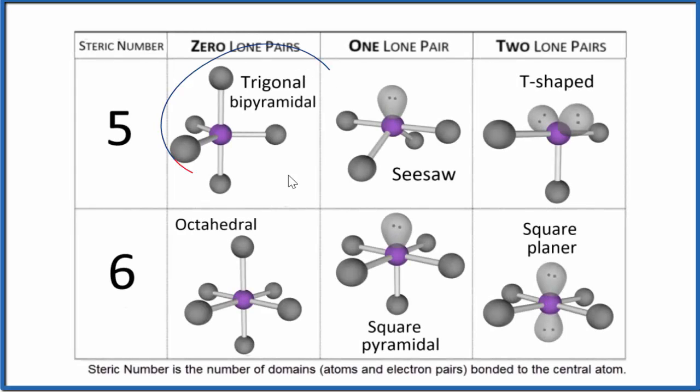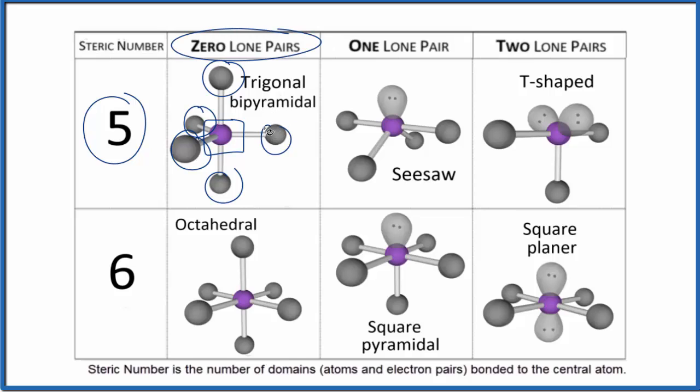Let's take a look at the trigonal bipyramidal molecular geometry, also called molecular shape. So when we have a steric number of five, that's five things—one, two, three, four, five—attached to that central atom and none of them are lone pairs, that's trigonal bipyramidal.